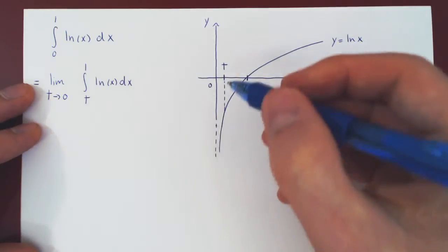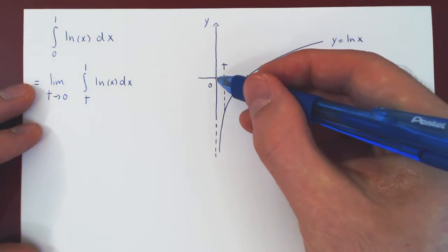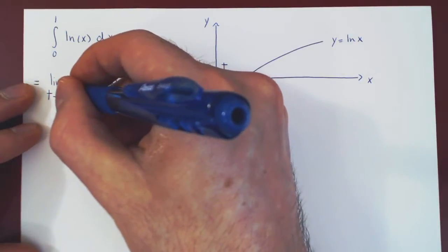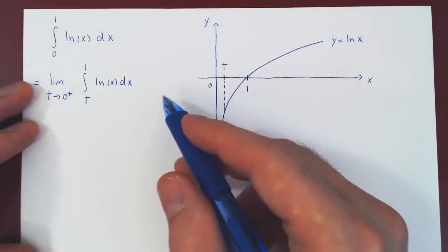So we have to be very careful. We have to let t approach 0 from the right, from the positive side. So t must be always slightly bigger than 0. And now we're good to go.